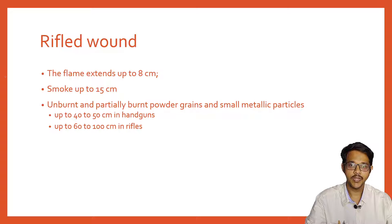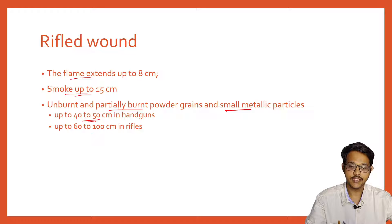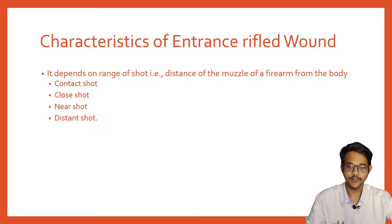When a rifle is fired, along with the projectile there are flames which travel up to 38 centimeters, smoke which may travel up to 15 centimeters, and unburnt or partially burned powder grains and small metallic particles which may travel up to 40 to 50 centimeters in handguns and 60 to 100 centimeters in rifles. These create characteristic wounds.